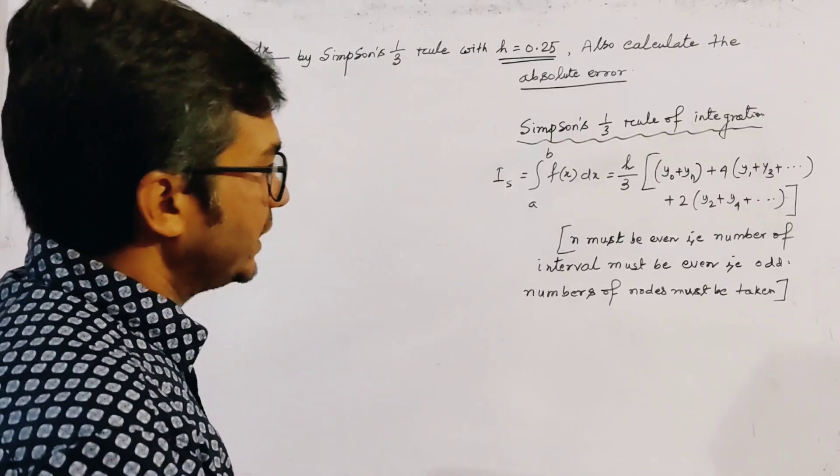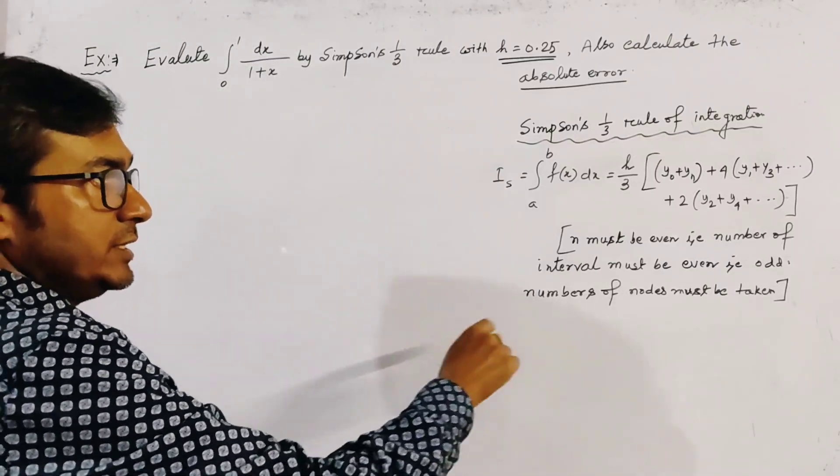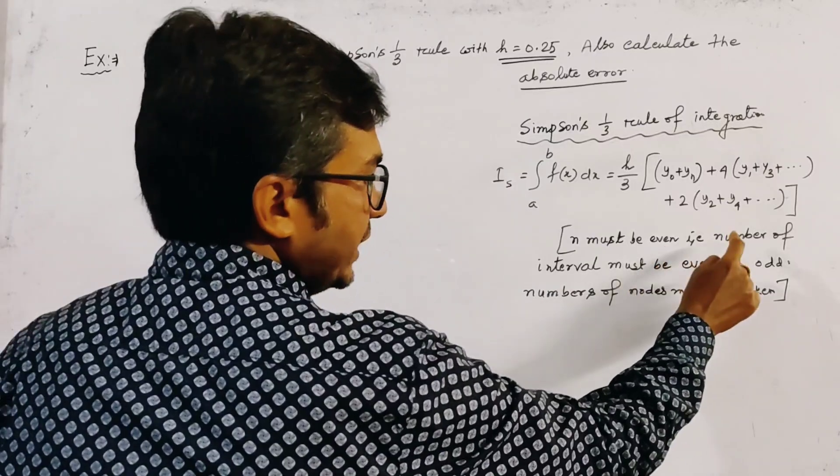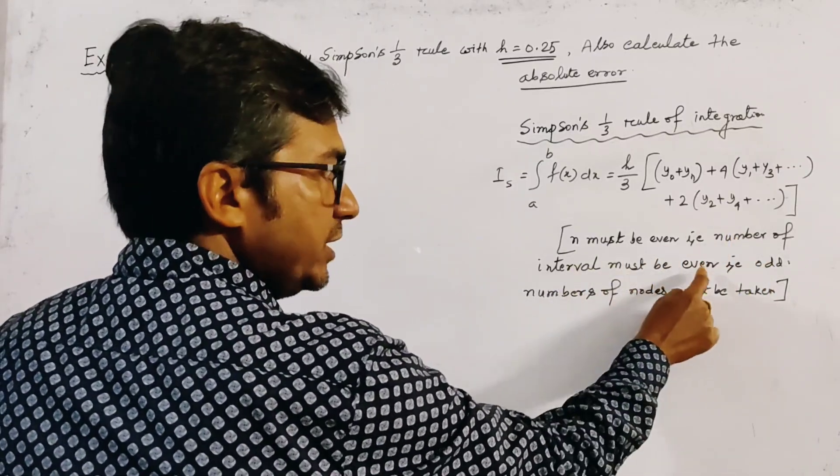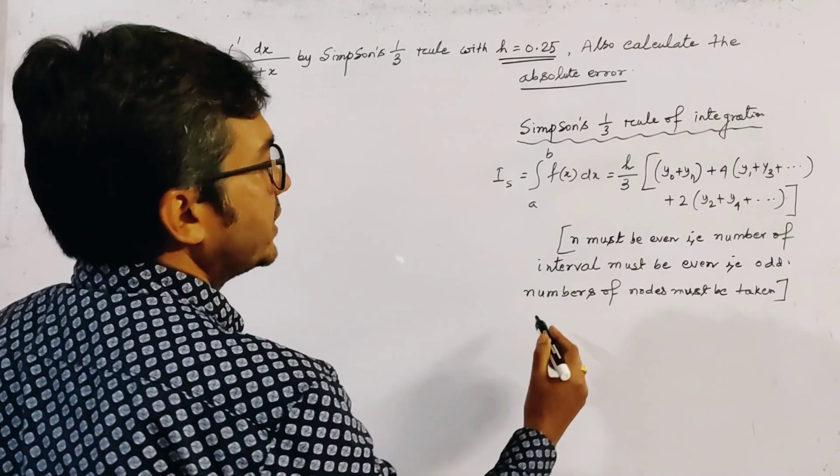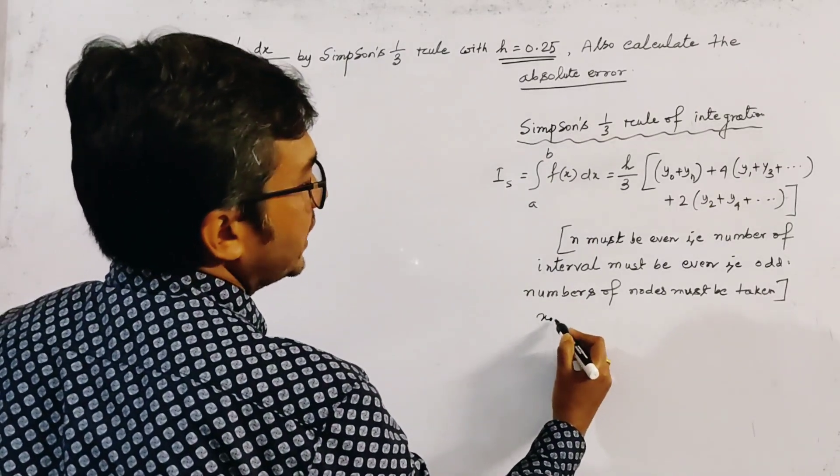And carefully see that here n must be even—that is, the number of intervals must be even. That is, the number of nodes must be odd, since we take the numbers as x₀, x₁, x₂...to xₘ.